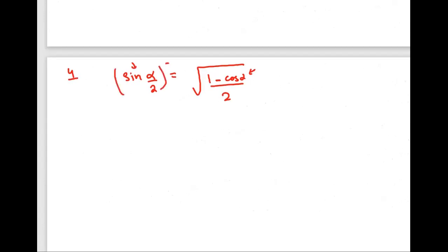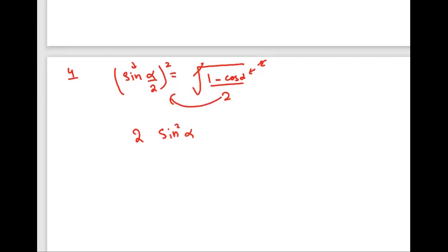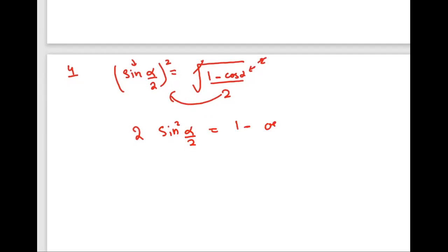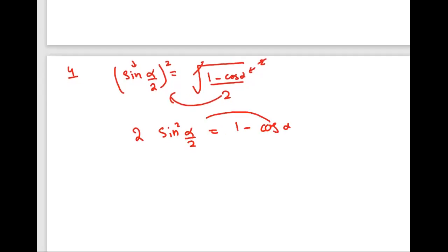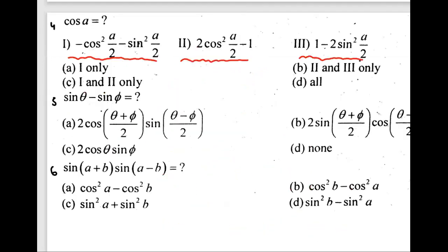Squaring both sides of sin(α/2) = √((1 − cos α)/2), we get sin²(α/2) = (1 − cos α)/2. Multiplying both sides by 2: 2sin²(α/2) = 1 − cos α. Rearranging: cos α = 1 − 2sin²(α/2). This is option 3. So option A (only 1) and option C (only 1 and 2) cannot be correct. The answer is either B or D — let's verify option 2.